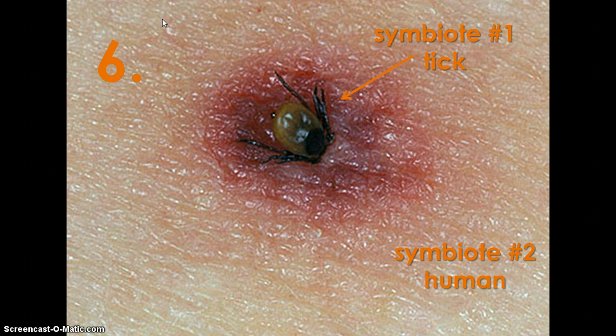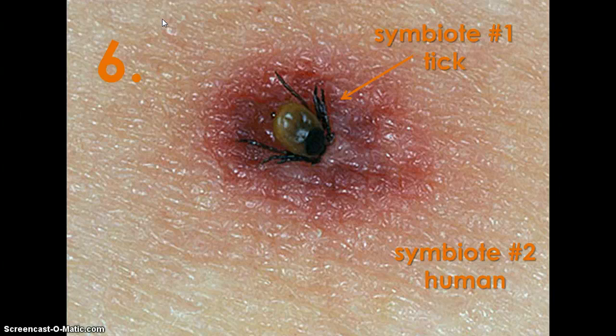In example number six, symbiote number one is a tick and symbiote number two is a human. The tick is benefiting because it is using the human as a food source. And as some of you may know, symbiote number two is being harmed because ticks carry diseases such as Lyme disease.